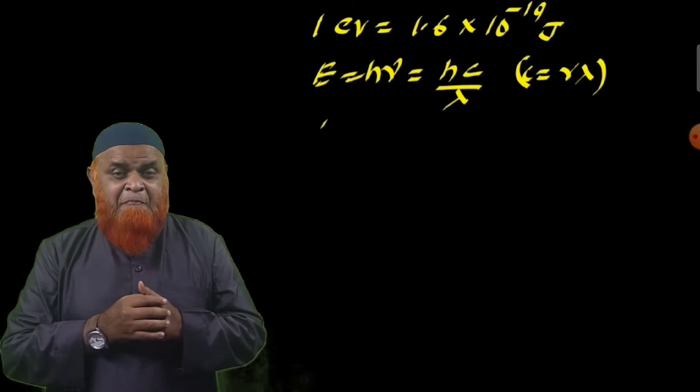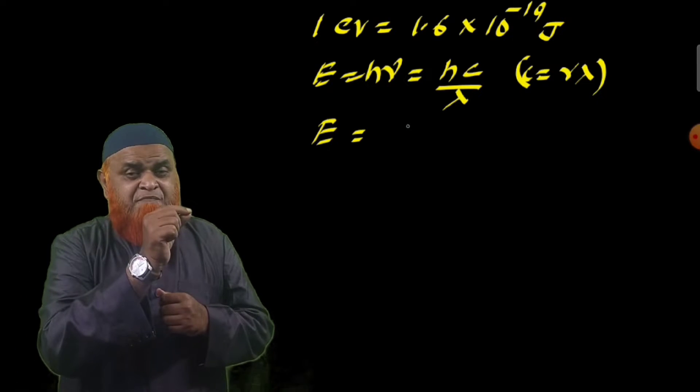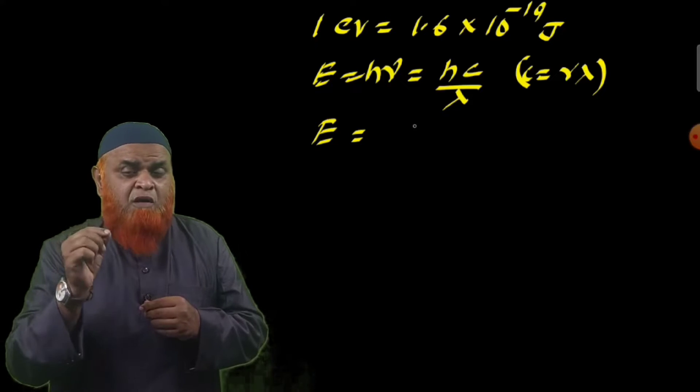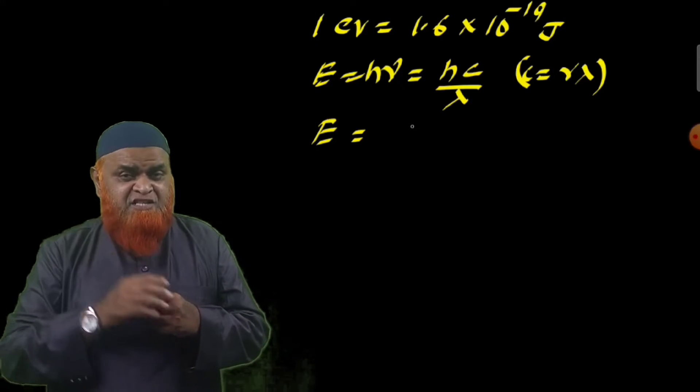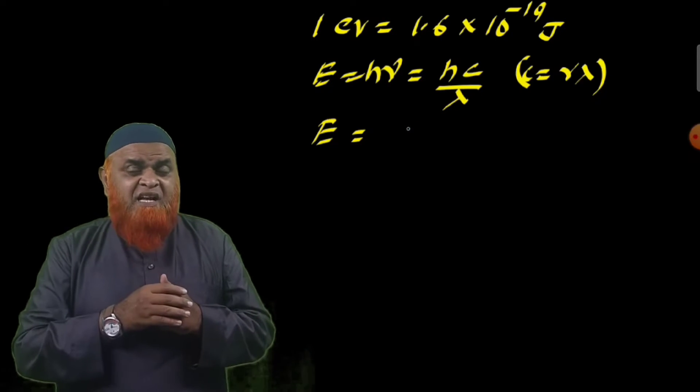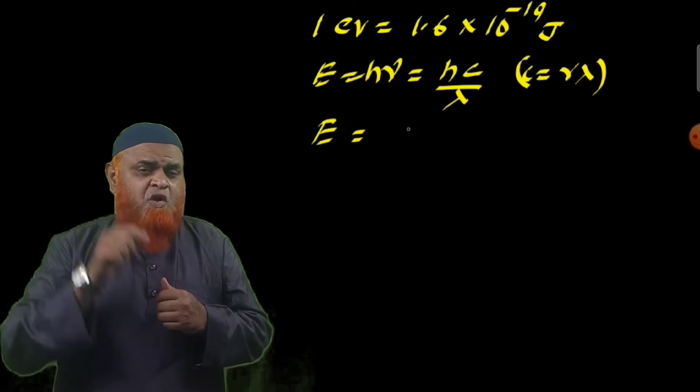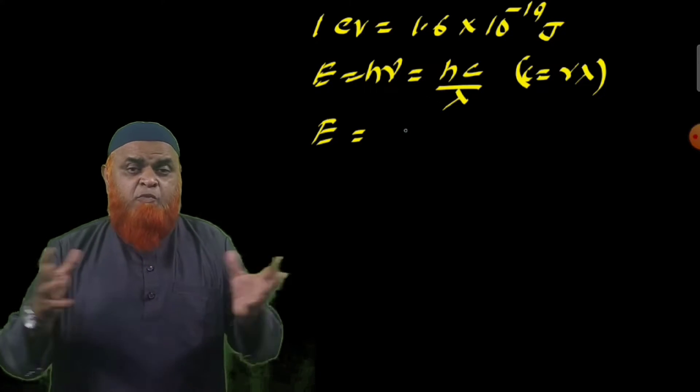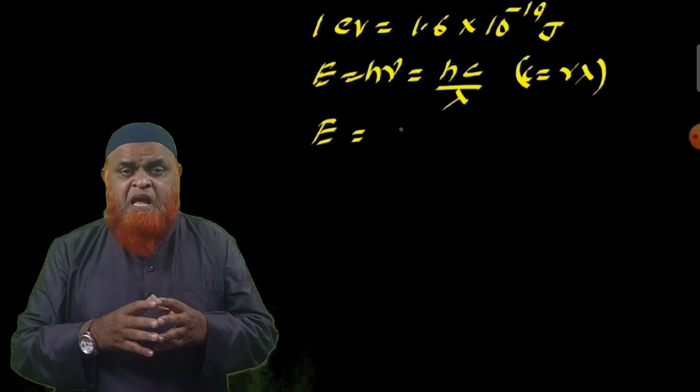If you substitute the value of h, that is 6.62 times 10^-34, C is equal to 3 times 10^8, and lambda is given as 6000 Angstroms. If you want to convert Angstroms into meters, you have to write 10^-10. But this is a very complex method. There is one shortcut formula: you just write E is equal to hC by λ.